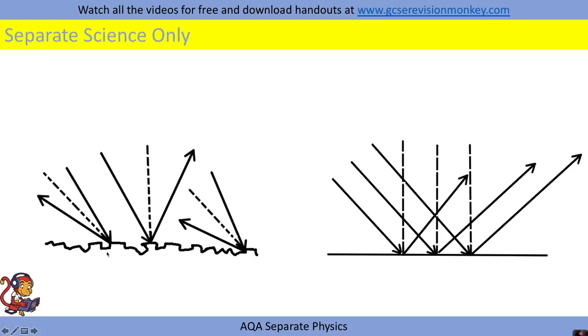If you have a rough surface like this one shown on the left here then the rays of light coming in will all hit different angles of surface. They will all obey the law of reflection whereby the angle of incidence is equal to the angle of reflection. However the light will be scattered because each ray of light will be reflected off at different angles.